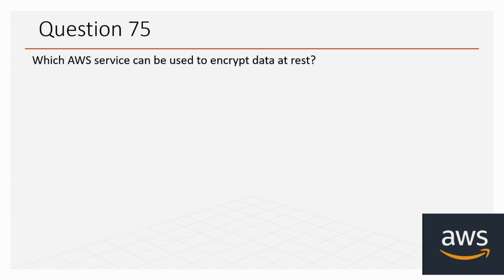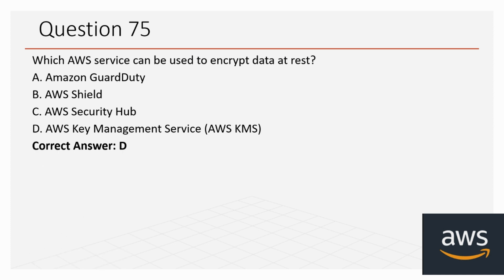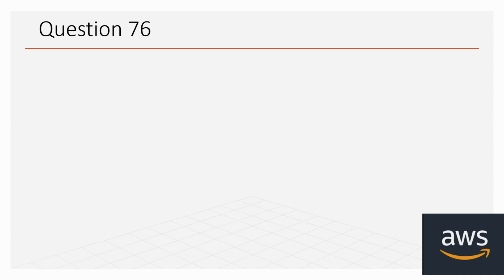Question 75: Which AWS service can be used to encrypt data at rest? Options: Amazon GuardDuty, AWS Shield, AWS Security Hub, AWS Key Management Service (KMS). The correct option is D, AWS Key Management Service (KMS).